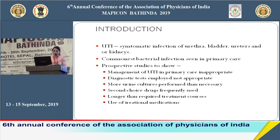Conditions that make a UTI complicated include: indwelling urinary catheter, diabetes mellitus, male gender, children below 12 years, renal failure, renal stones, history of urinary tract surgery, pregnancy, voiding dysfunction or neurogenic bladder — congenital or acquired from spinal cord injuries — immunosuppression such as in transplant patients, and congenital anomalies of the urinary tract. Treatment for complicated UTI is altogether different.